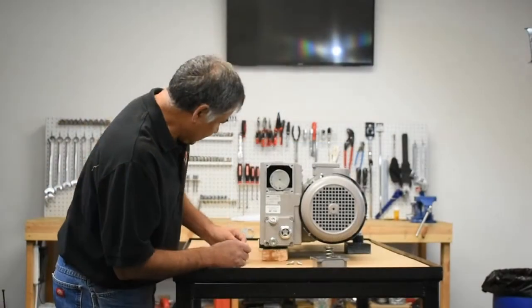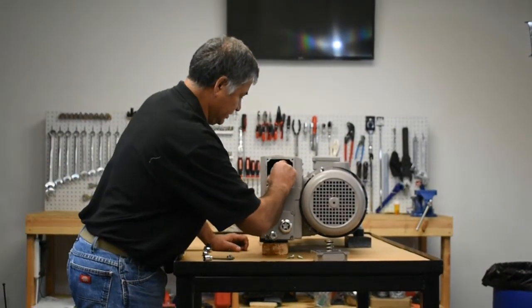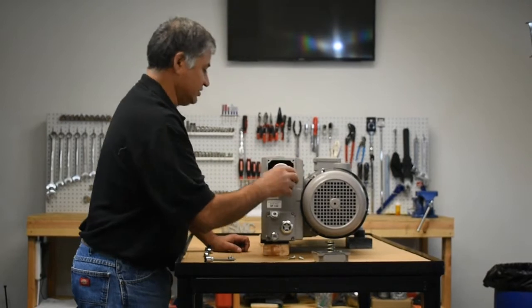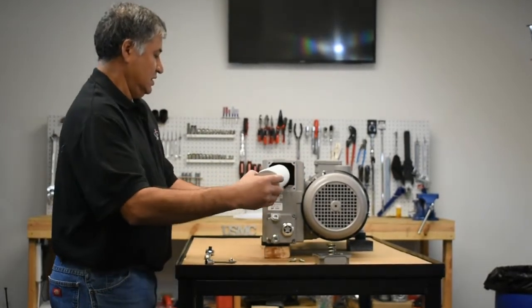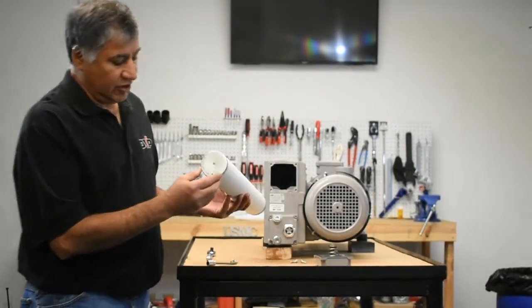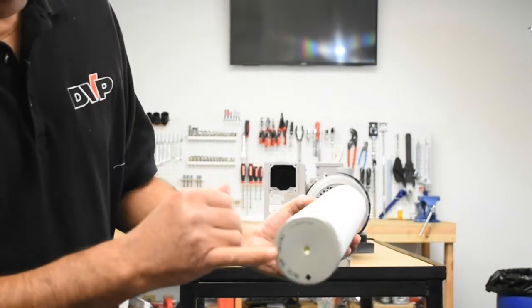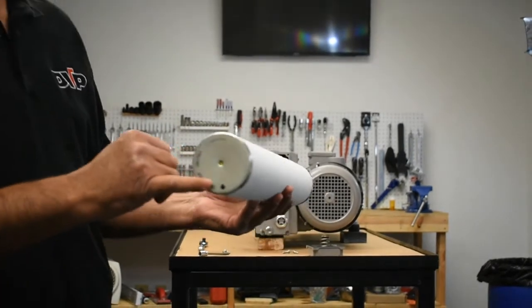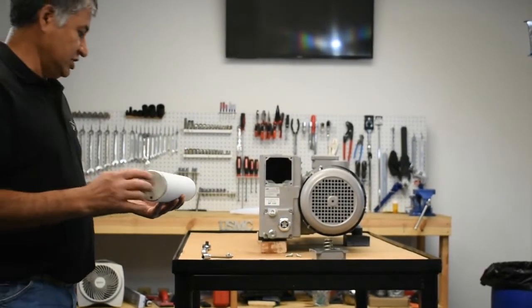So, inside here is your exhaust filter. It pops right out. Now, on the front of the exhaust filter there is an arrow. That arrow designates the bottom part of the filter when it is in there.